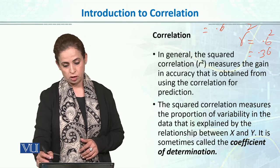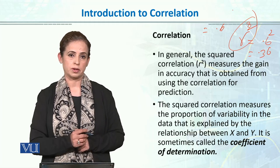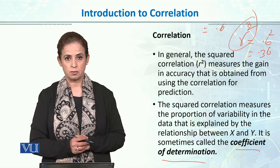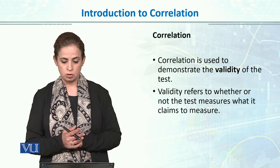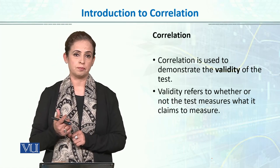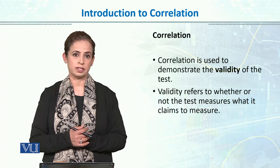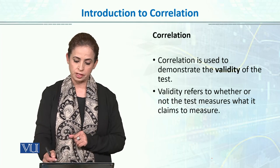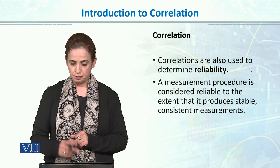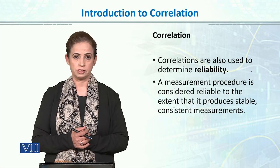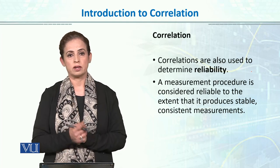This R-squared value, which tells us how much variance is explained in the dependent variable due to the independent variable, is called the coefficient of determination. A second application of correlation is that we calculate the reliability and validity of tests using the correlation coefficient. We express both validity and reliability in terms of the correlation coefficient.